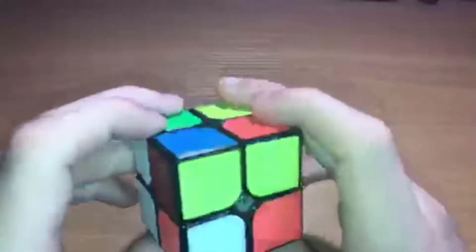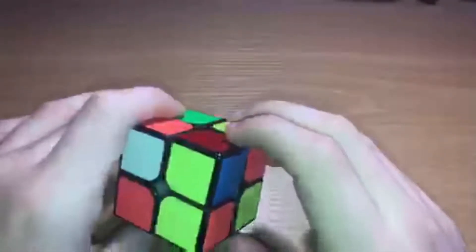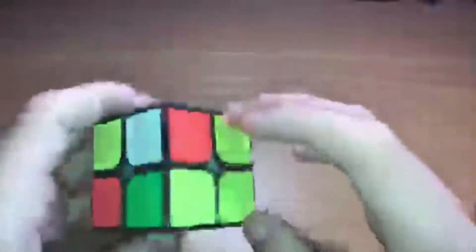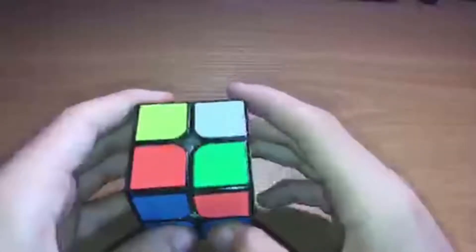Oh actually instead of moving this one down I'm gonna do U R, making these two opposite and these two the same. And then I'm gonna move this over and do R2 U' R2. And then CLL.